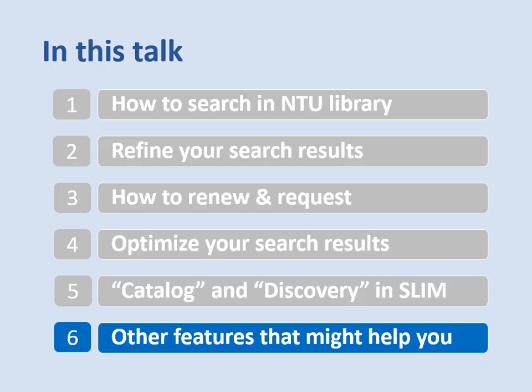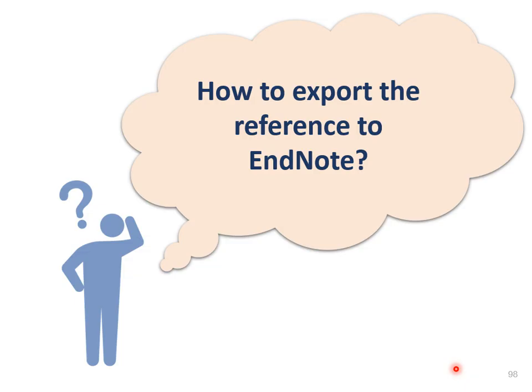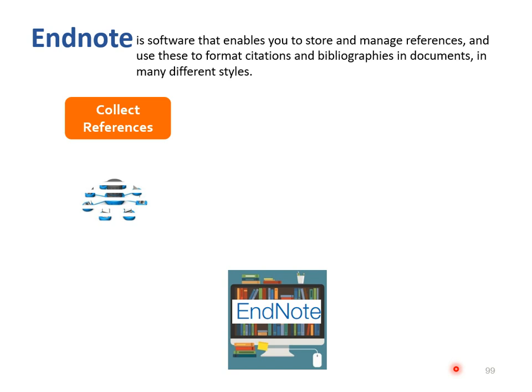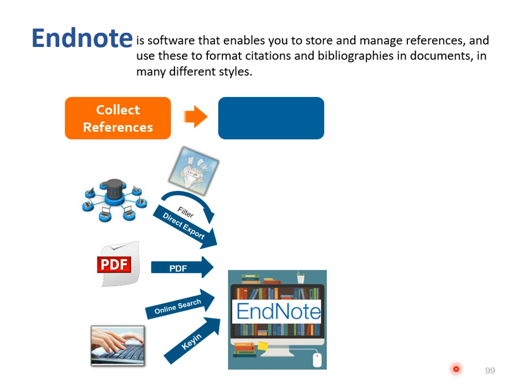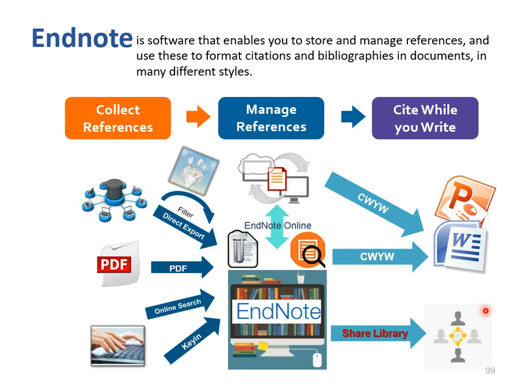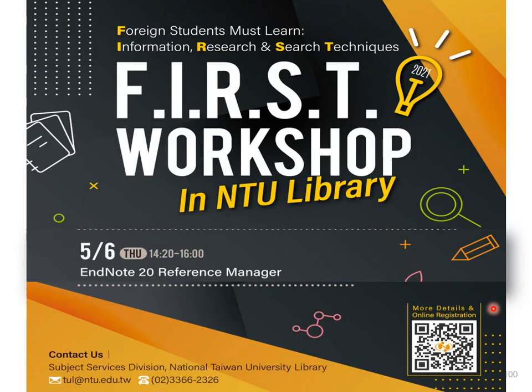After talking about searching in SLIM, now we will move on to other features in SLIM that might help you make better use of our system. When using SLIM, you can export references of items. For example, you can export references to EndNote. EndNote is a powerful bibliographic management tool — it has features to keep all your references and reference-related materials in a searchable personal library. Then you can use your references in word processing documents to create formatted citations and bibliographies or an independent reference list. In short, EndNote is really useful and helps with academic writing. If you are interested in EndNote, there will be a workshop on May 6th — welcome to attend.